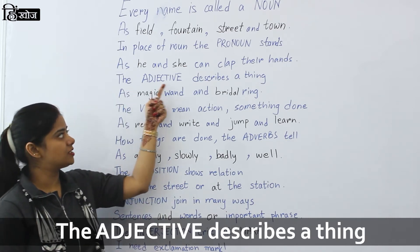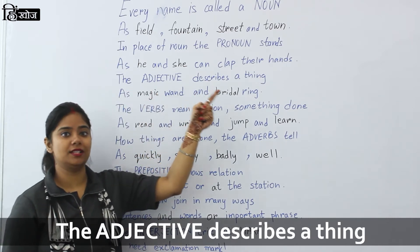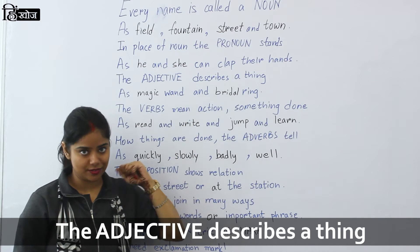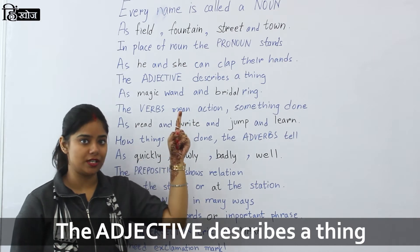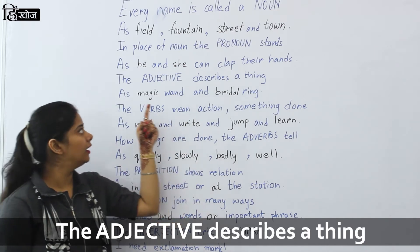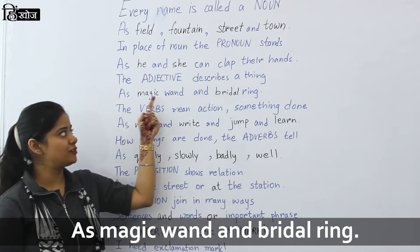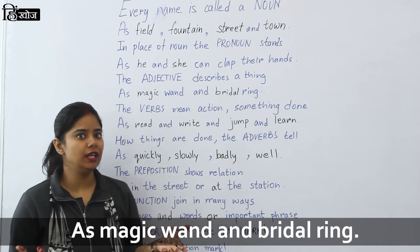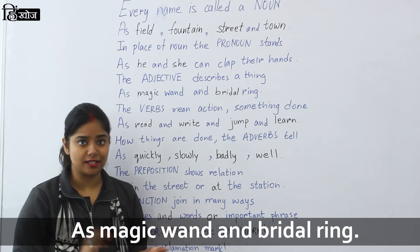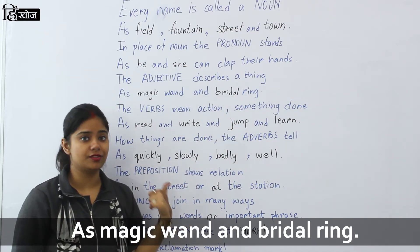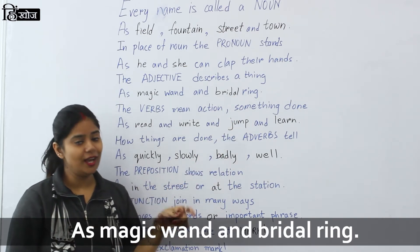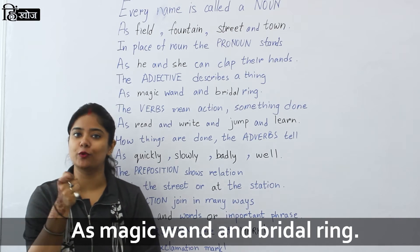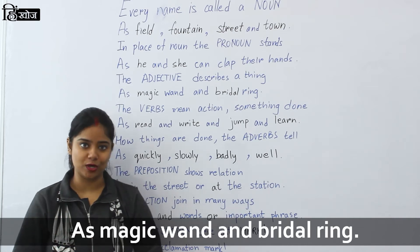The adjective describes a thing, as magic wand and bridal ring. So what was the ring? The bridal ring was described. The wand was the magic wand.